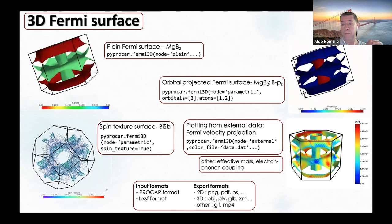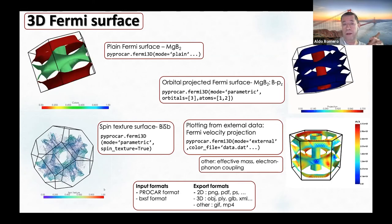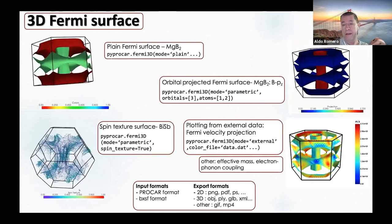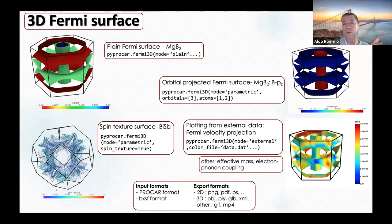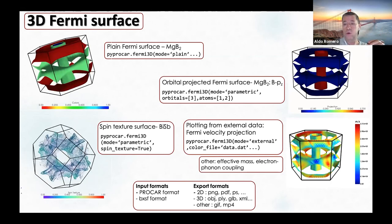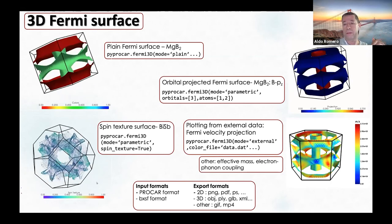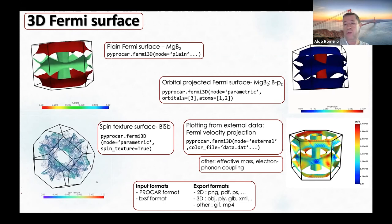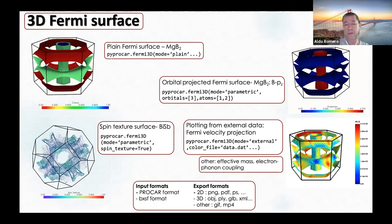We can also color the Fermi surface according to a property. One internal property we have calculated is the Fermi velocity and effective mass, obtained by calculating the Gaussian curvature of the Fermi surface. You can also read an external property from a file that shares the same k-mesh used to calculate the Fermi surface, and use that to color the Fermi surface.